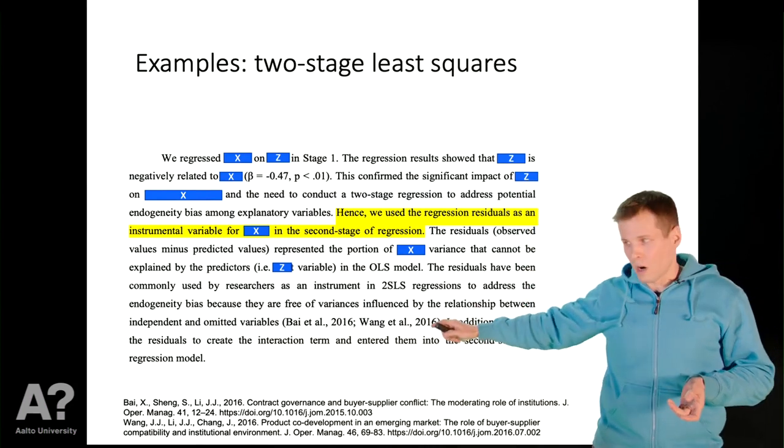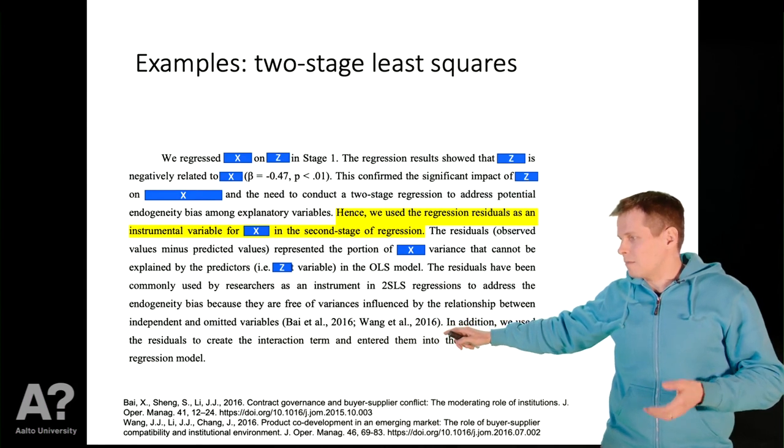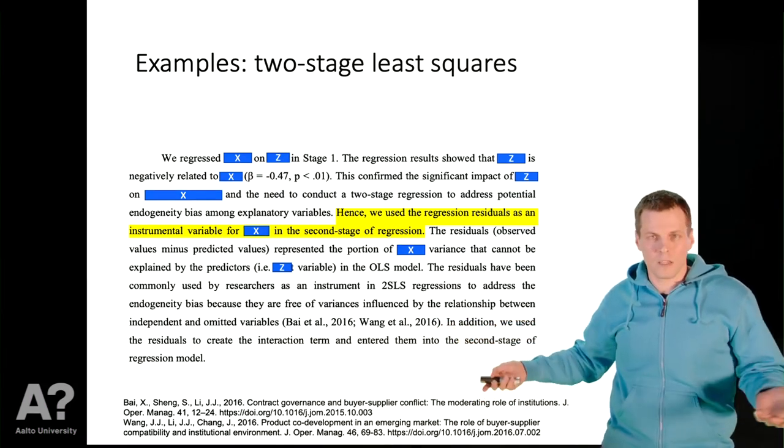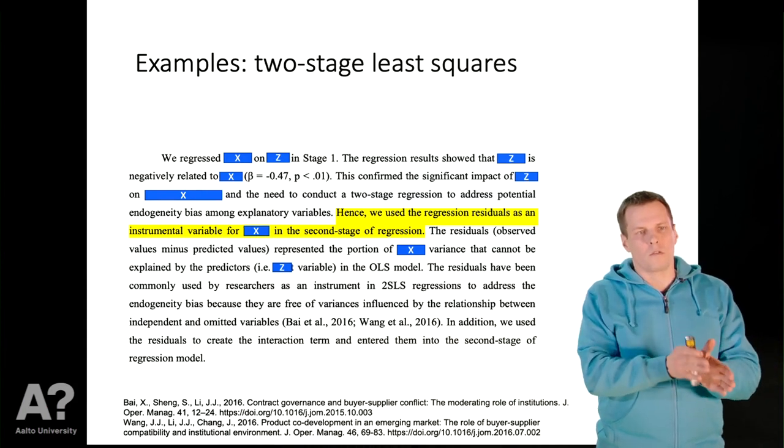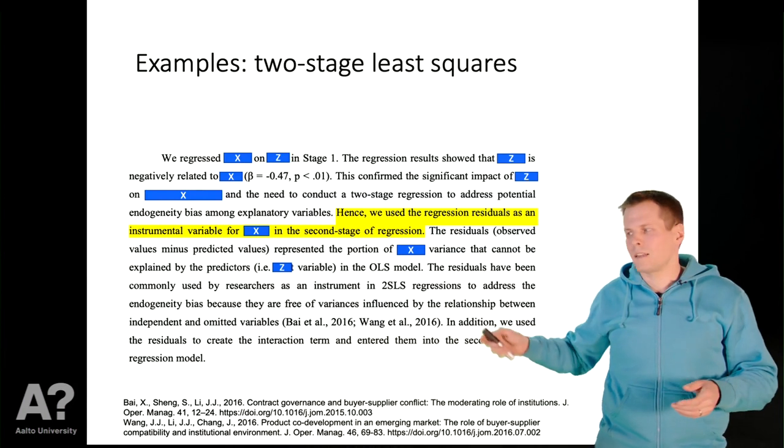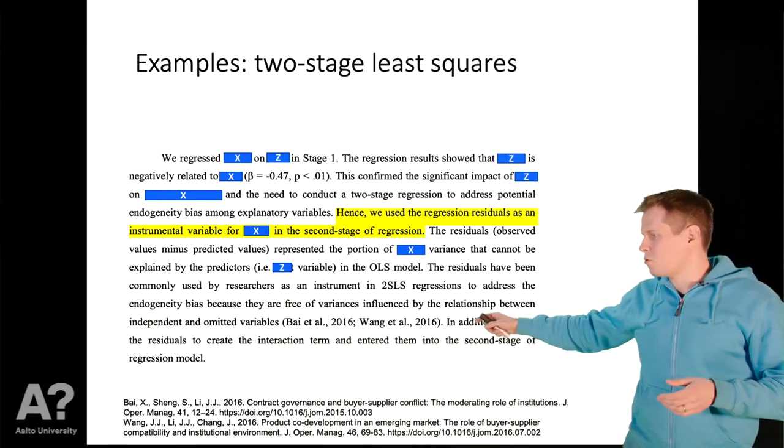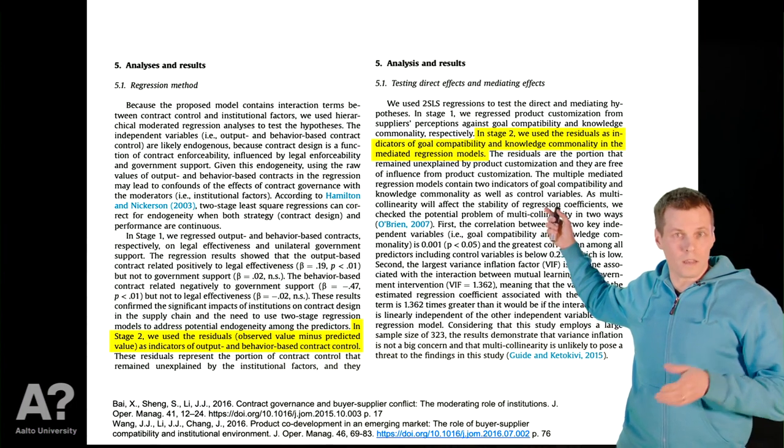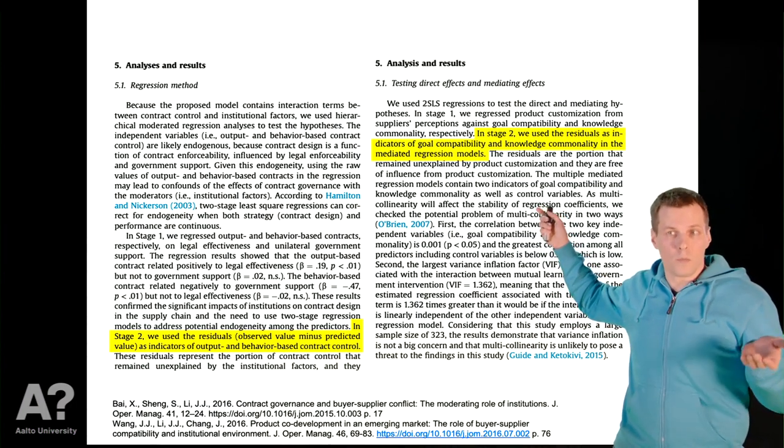They cite two articles that were published the previous year in the same journal. So that's fairly common. You cite articles that use the same technique that you have applied before and it happens that these two cited articles quoted here actually explain the two-stage least squares procedure incorrectly.